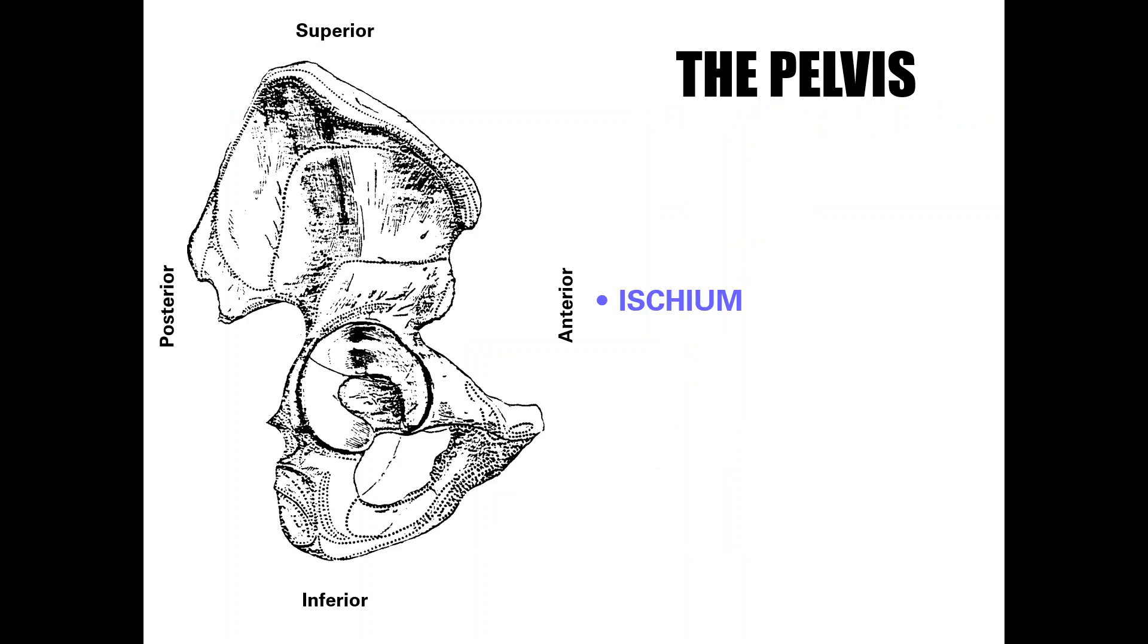Now moving on to the ischium. We have the ischial spine, which is posterior and below the PSIS and PIIS. We have the lesser sciatic notch. And then again, the ischial tuberosity that you sit on, sometimes called your sits bone. We have the ramus of the ischium, and a ramus is just a protrusion of bone. And that ramus of the ischium meets with the pubic bone.